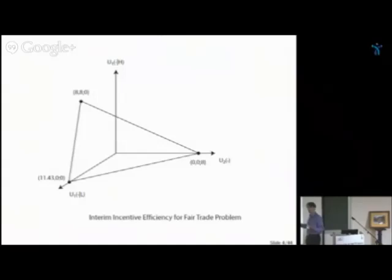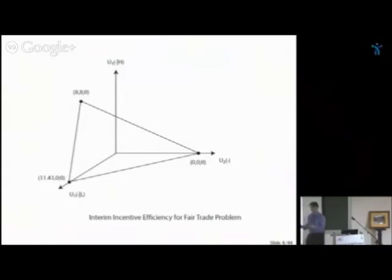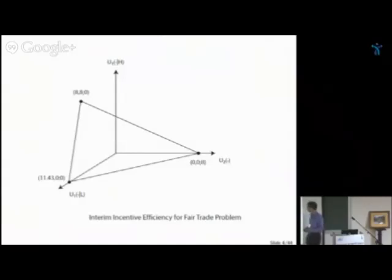If you look at second-best efficiency, there are still many contracts which are second-best efficient. I tried to represent the space of utilities — all the contracts which are interim incentive efficient. Player 2 does not know the quality of the car, so he has one utility number (expected utility). Player 1 knows the quality, so you have two axes. You get a convex polyhedron in the space of utilities, and the question is: which one are you going to pick? Surprisingly, there is very little in the literature about that question.